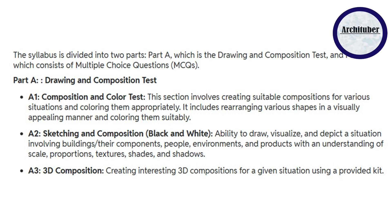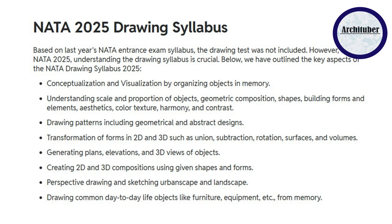As you can see on the screen, they have given the detail of Part A — drawing and composition. A1, composition and color, involves creating suitable compositions for various situations and coloring them appropriately, including rearranging shapes in a visually appealing manner — it is a 2D question. A2, sketching and composition, tests the ability to draw, visualize and depict situations involving buildings, components, people, environment, and products, with understanding of scale, proportion, texture, shades and shadows. The second question can be a scene or a perspective drawing. A3 is 3D composition — creating interesting 3D compositions from a provided kit.